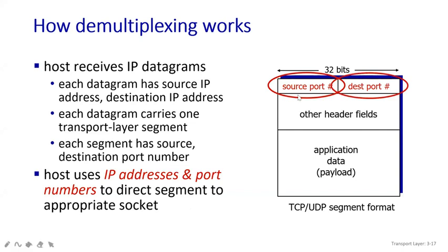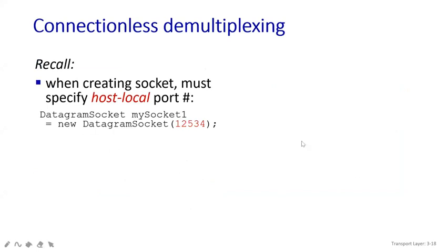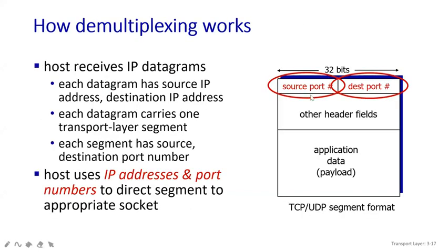As per the diagram, there is a source port address and a destination port address. The total length of data for both source port address and destination port address must be only 32 bits. Then you can add other header fields such as segments, and the last part will be your application data payload. This is sent from the application layer through transport and network layers to the receiver side.